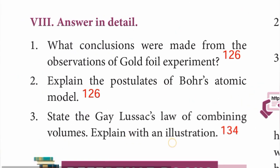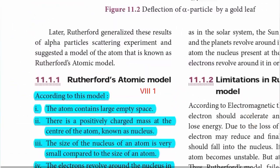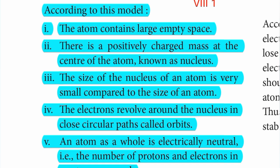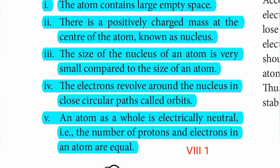Moving to Roman number 8, answer in detail. First question: what conclusions were made from the observations of the gold foil experiment? Page number 126. According to Rutherford's atomic model: (1) the atom contains large empty space; (2) there is a positively charged mass at the centre of the atom known as nucleus; (3) the size of the nucleus of an atom is very small compared to the size of an atom; (4) the electrons revolve around the nucleus in closed circular paths called orbits; (5) an atom as a whole is electrically neutral — the number of protons and electrons in an atom are equal.